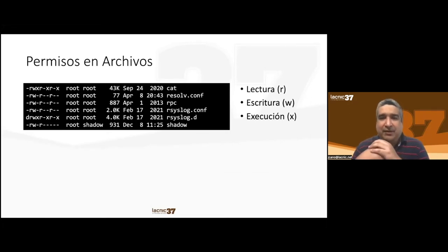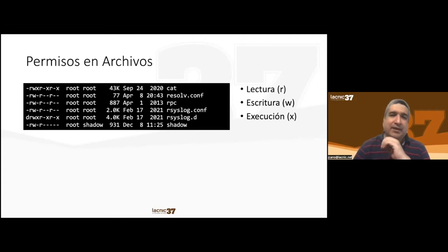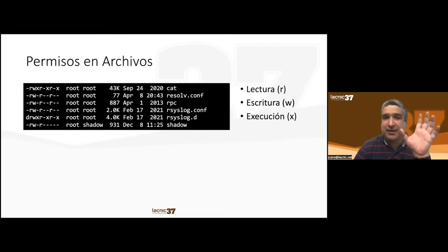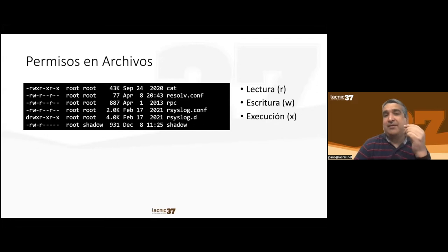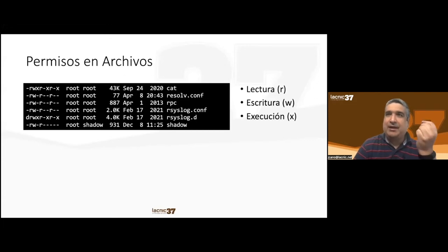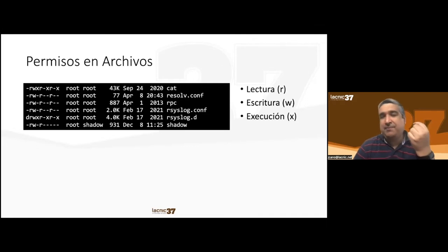File authorizations: when you list files in the console, the first section on the left shows the authorizations for each file. R is read, W is write, X is execute. A file with X is a binary or script that can be executed. For directories, the execute permission is required — otherwise you cannot access the directory.